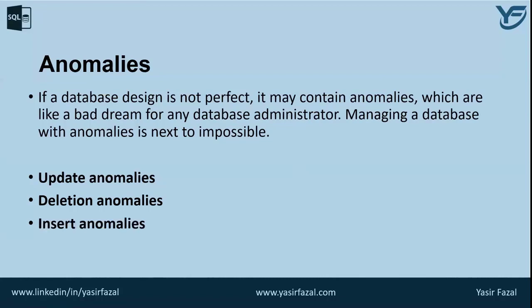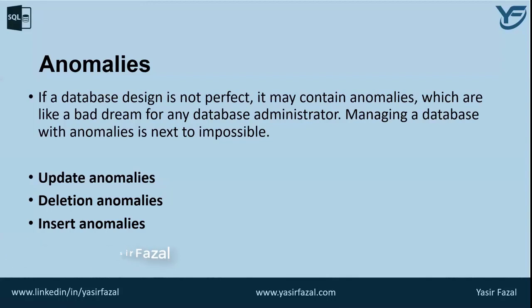The other one is insert anomaly. We try to insert data into a record that does not exist at all. For example, if I have a primary key–foreign key relationship between two tables, and I try to insert data into table B, I get an insert anomaly because the parent table does not contain the corresponding parent row in table A.